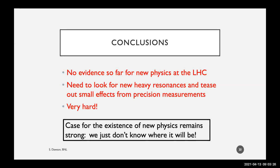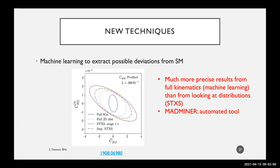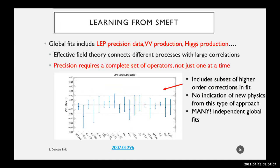Question from Pavel Nadolski: Regarding constraining SMEFT using machine learning in differential distributions — what about the curse of dimensionality with hundreds of free parameters? Sally's answer: This particular plot only has two non-zero coefficients with the third profiled over, and does not include all possible operators such as flavor observables. People have started including flavor observables and they show it makes a difference. We don't really know yet how many operators need to be included — it's a very difficult open question.